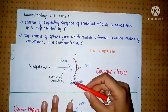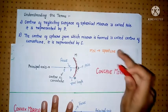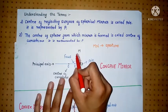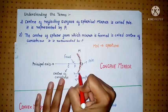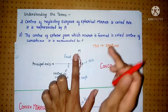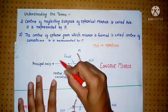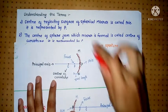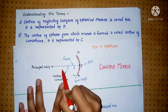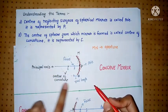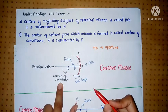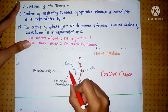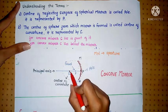The center of the sphere from which the mirror is formed is called the Center of Curvature. We know that this mirror is formed from a sphere. The center of that sphere is called the Center of Curvature. For a concave mirror, the center of curvature lies in front of the reflecting part.